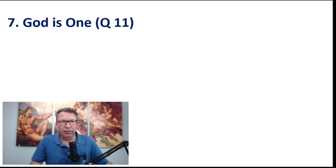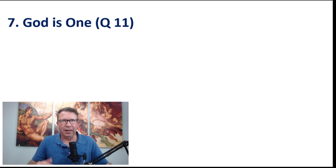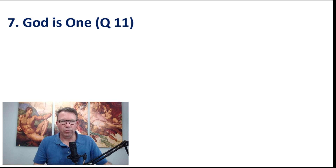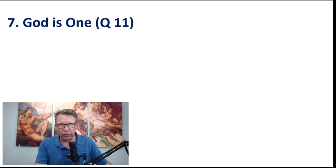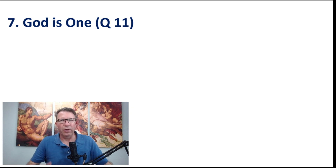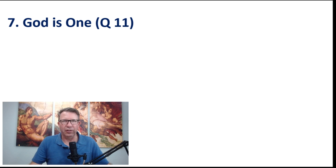This is question number 11 in the Summa, that God is One. The seven attributes he goes through in a row are from question three to question 11, with a couple of questions in between related to goodness in general and things like that. So let's get straight to it.